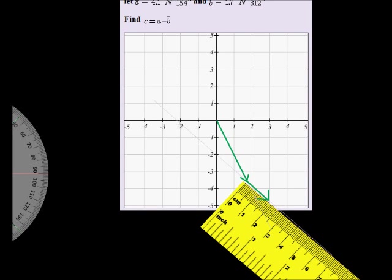Now our resultant vector is from the beginning to the end. There we go, that's our resultant vector.